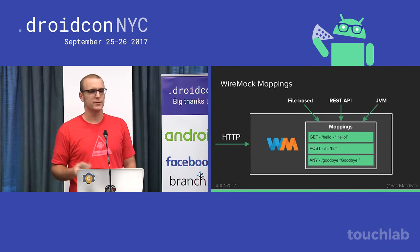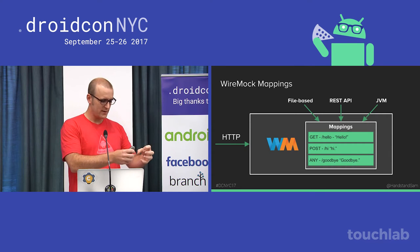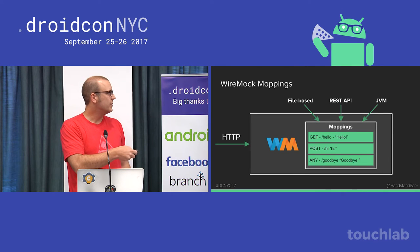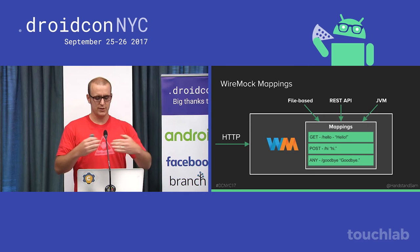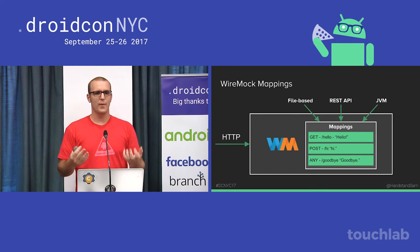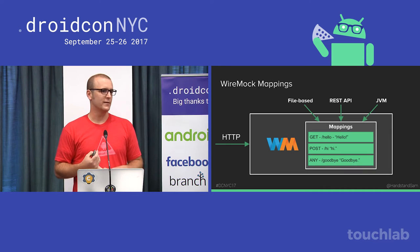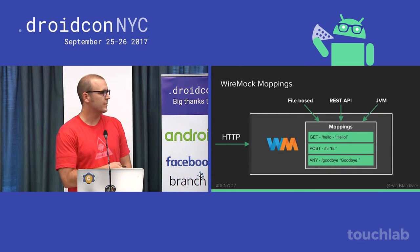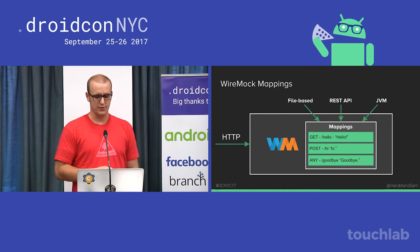These mappings can come from three sources. They can come from file-based mappings — files on the disk that get read in and loaded into memory in WireMock. You can use the REST API, which is really cool because you can just make a POST request to load a mapping in — meaning you can use WireMock from any language like Node, Ruby, Clojure, whatever you want. And then via the JVM, which is what you'll probably use on Android, where you can programmatically create the server and talk to it.